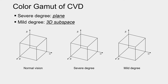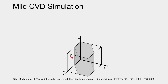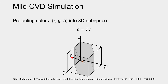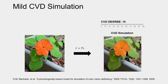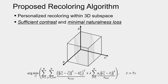From the perspective of color gamut, normal vision is supposed to be a space Q. According to CVD simulation studies, the severe degree of CVD is defined as planes, and the mild degree of CVD is a 3D subspace of Q. Given the color C in the input image, for simulation it will be projected into the gamut of CVD. Simulation results of different degrees of CVD are shown in the animation on the right side. In this study, recoloring is performed within the 3D subspace via minimizing the optimization function shown at the bottom.